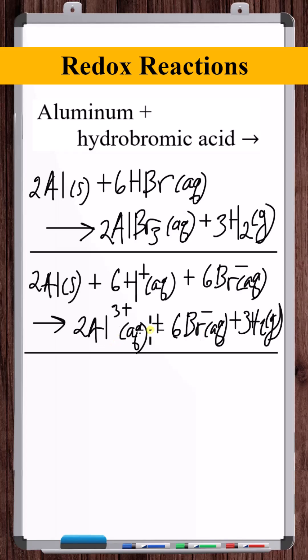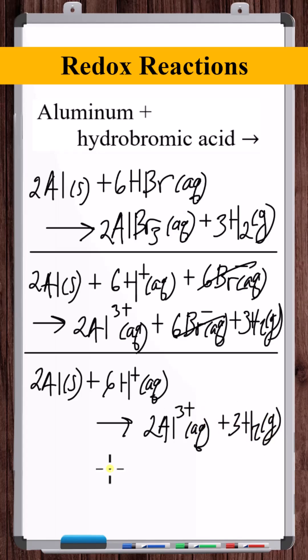Now to get the net ionic equation, we just cancel spectator ions. And we're left with the net ionic equation.